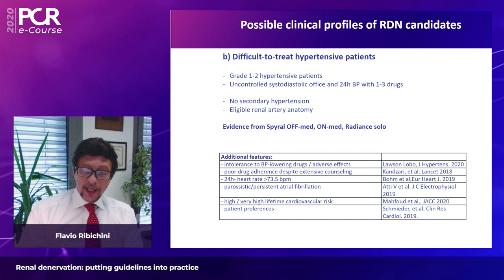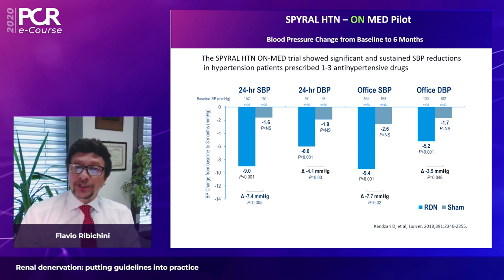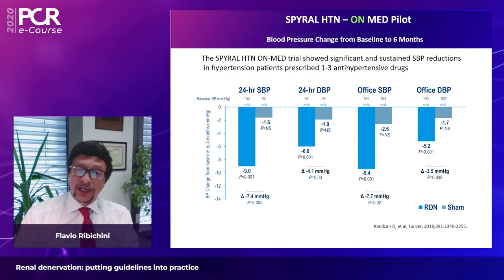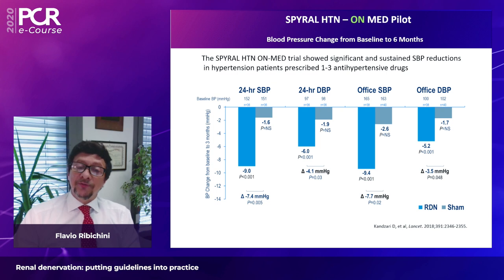Patient preference is again considered an important reason to use the technique. The SPYRAL HTN ON MED pilot study showed significant and sustained blood pressure reduction in hypertensive patients treated with one to three antihypertensive drugs, with both 24-hour and office blood pressure significantly reduced compared to baseline.